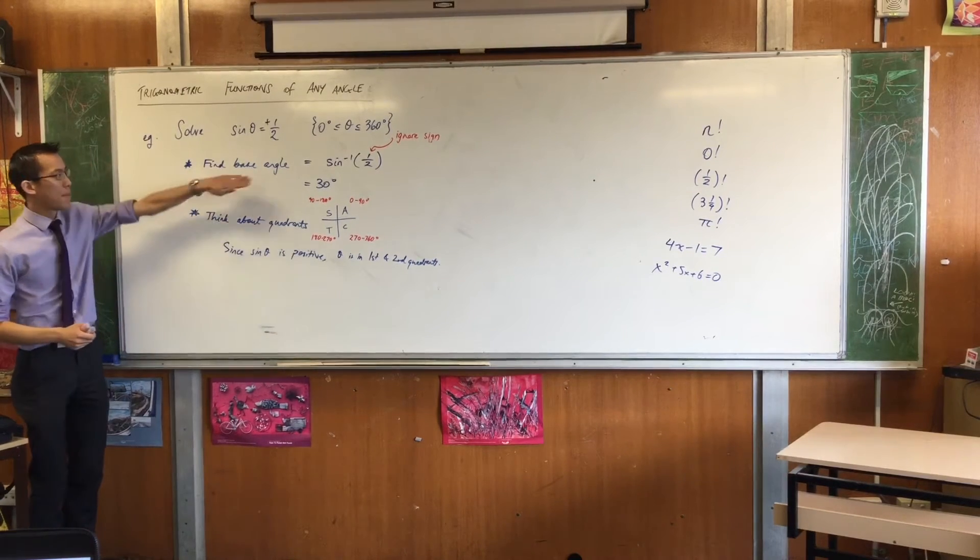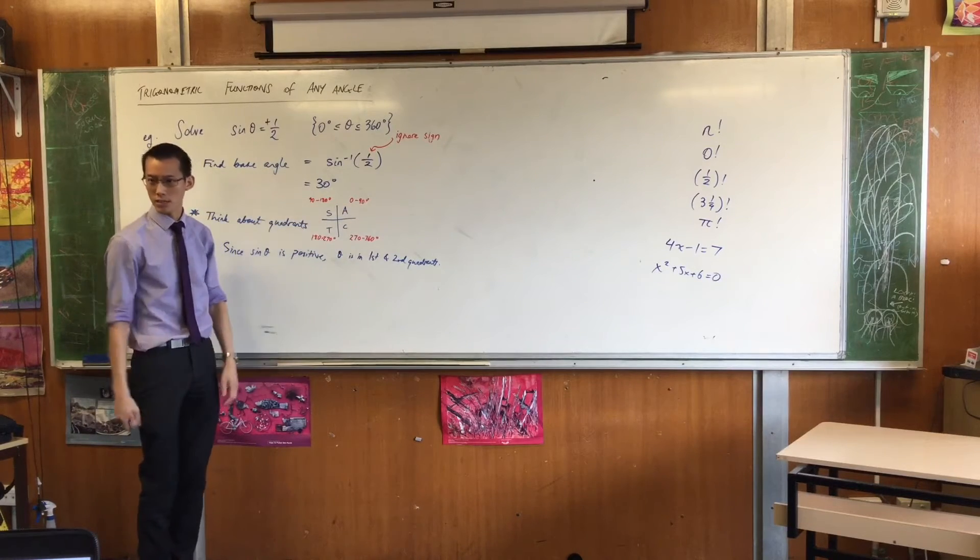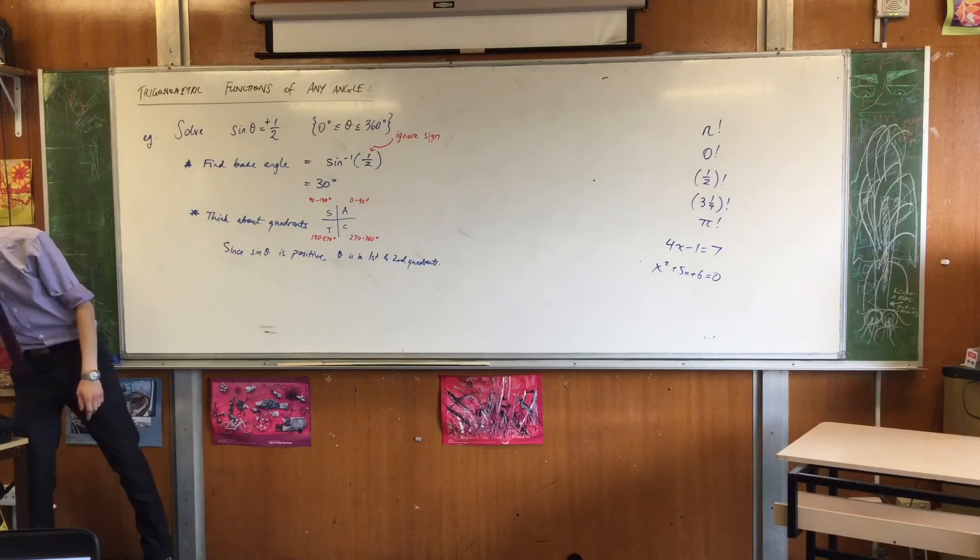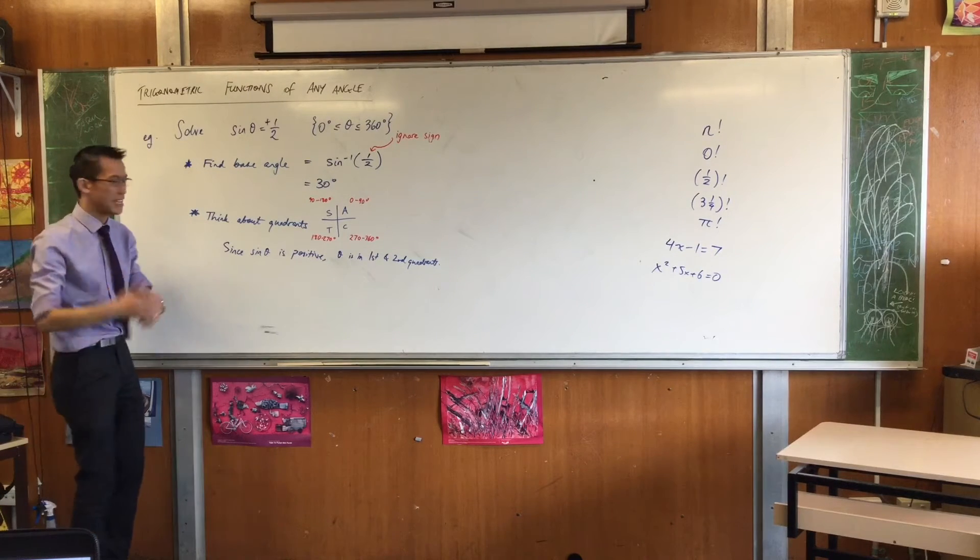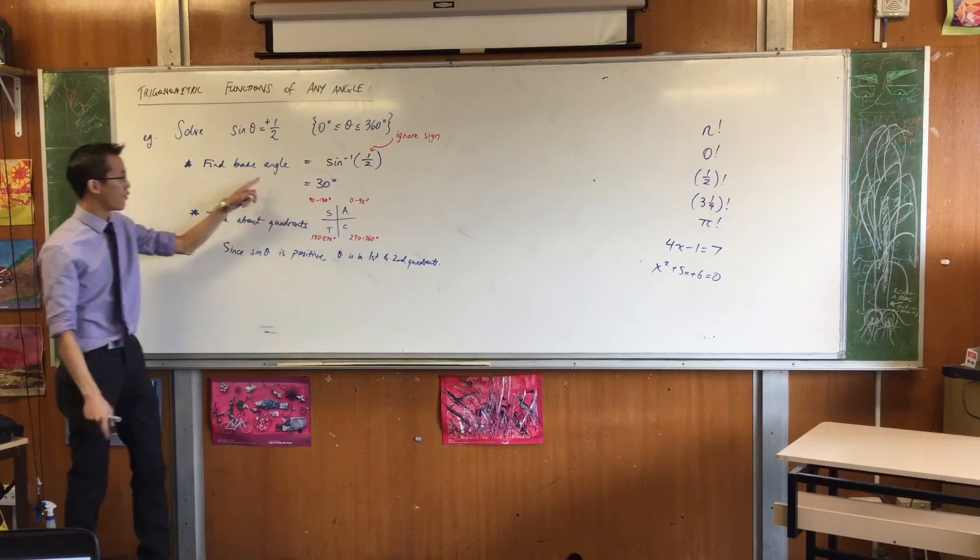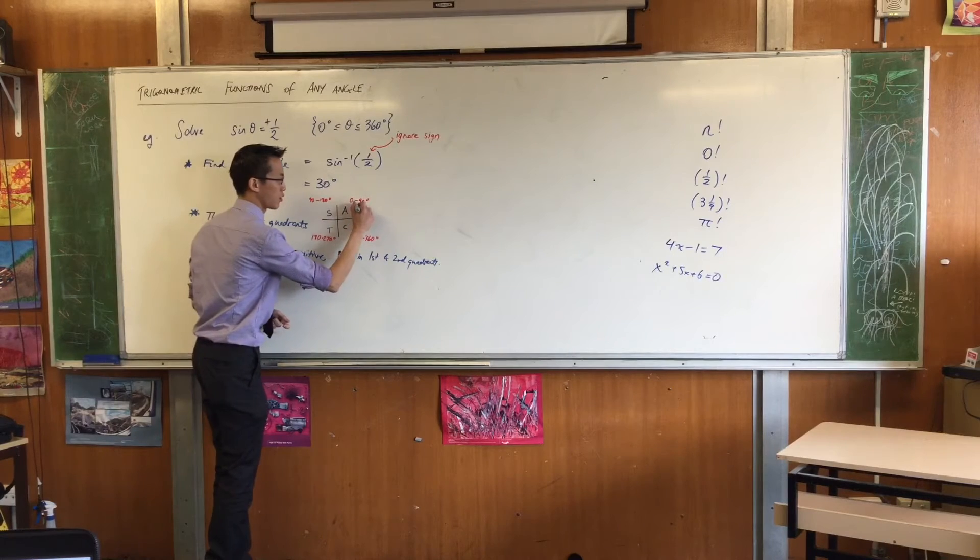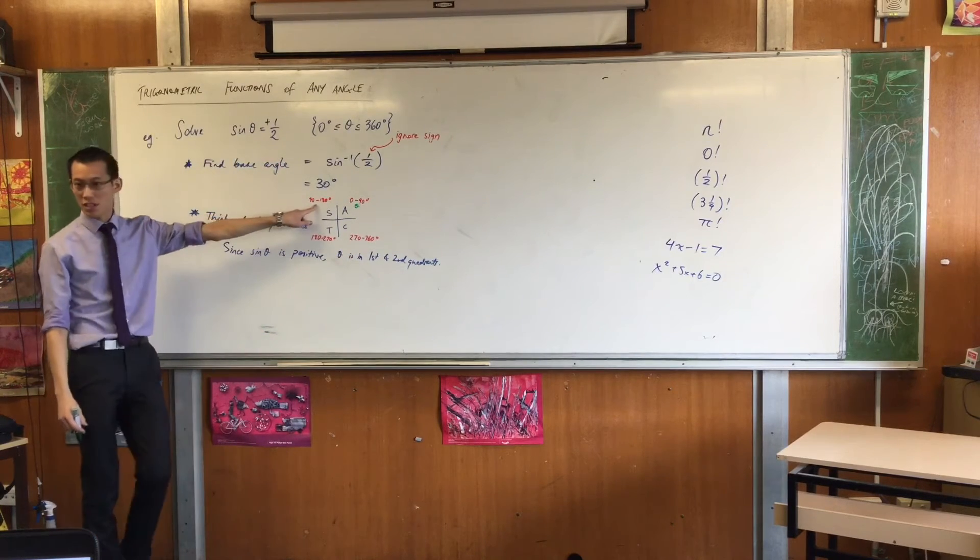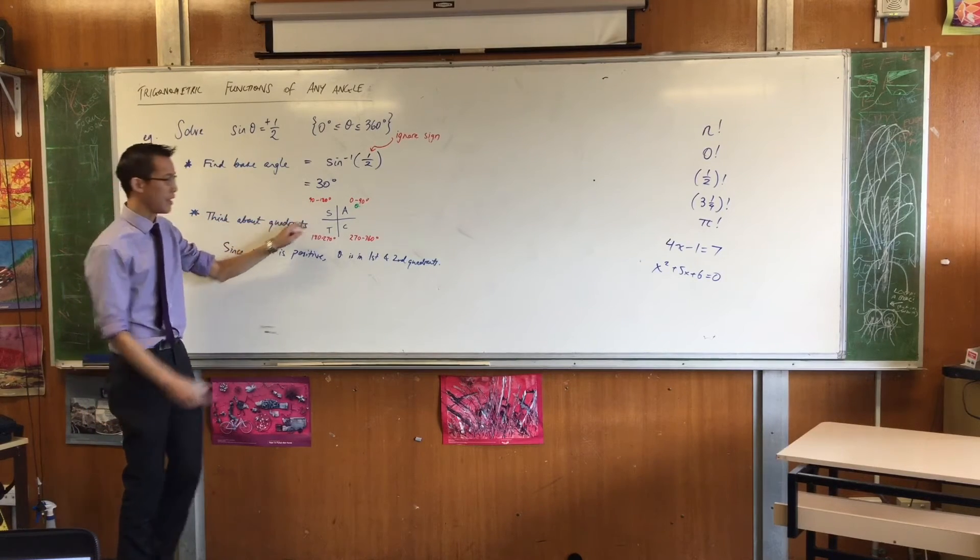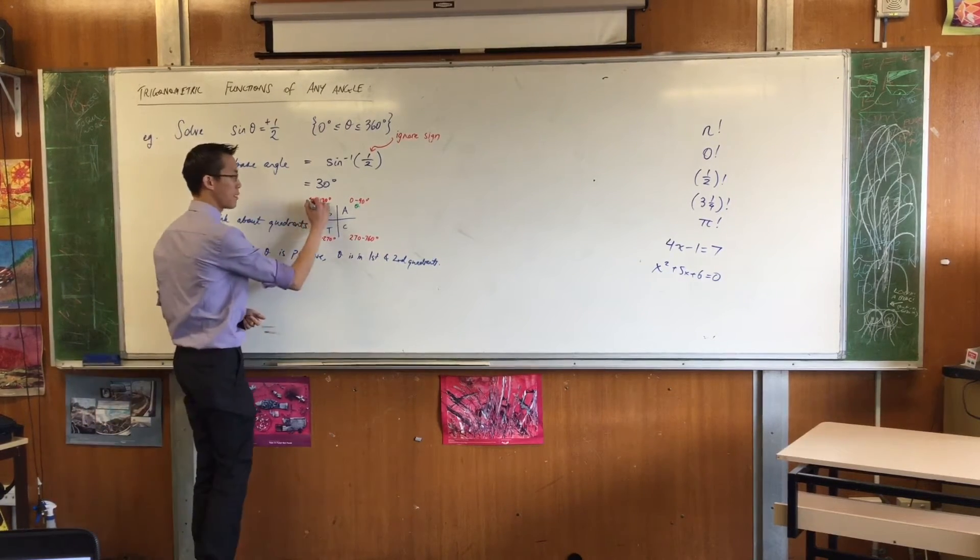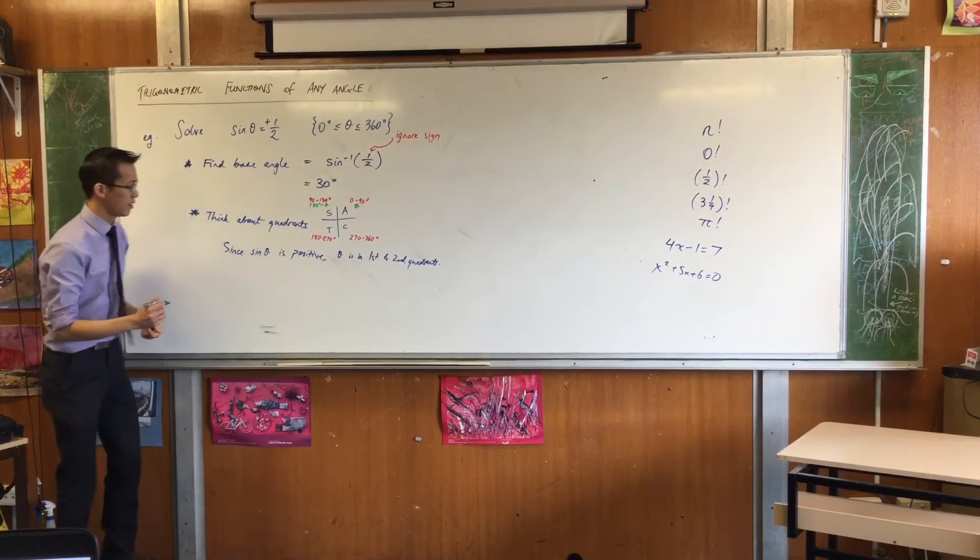So now I want to put my base angle inside each of these quadrants and work out what it's equivalent to. Okay, so in the first quadrant it's easy. The angle in here, the base angle in that quadrant, is just the base angle. So I'm just going to call that theta. Okay, when you move over into the second quadrant, what does the base angle look like in this quadrant? It's the supplement of theta. So it's going to be 180 degrees minus theta. Okay, can someone help me out?